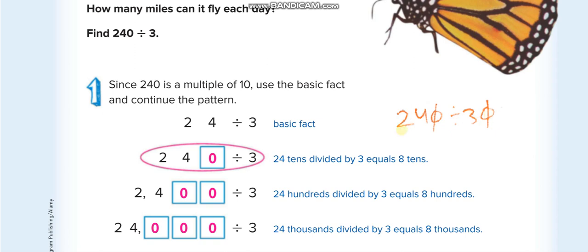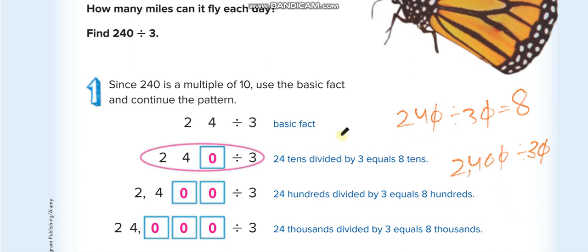Another example: 2400 divided by 30. We have one zero here, so we cancel one zero. One zero is still left in 2400 — we can't cancel it because the divisor has no more zeros. So we remove that remaining zero and keep it on the side to put back in the answer later.